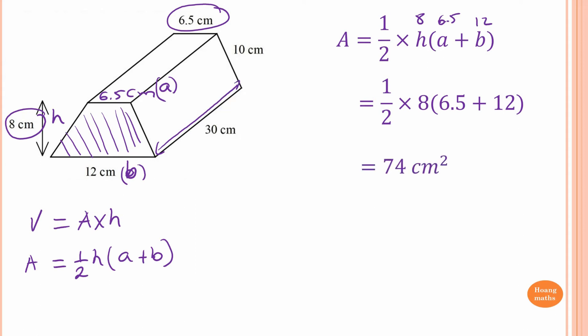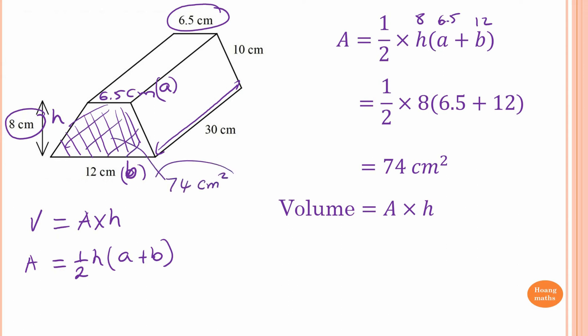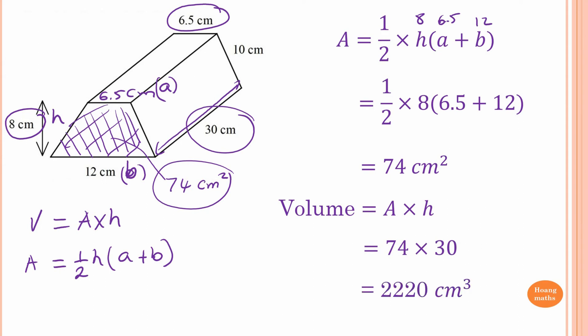So the area is 74 square centimeters. Now we know that volume is area times the perpendicular height. The area is 74 square centimeters, and we multiply by the perpendicular height, which is 30. So 74 times 30 gives us an answer of 2,220 centimeters cubed.